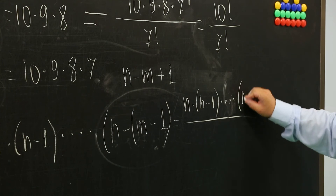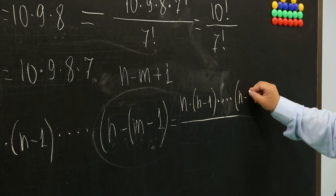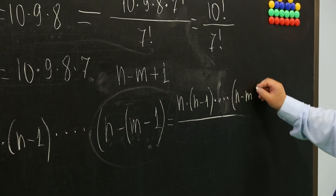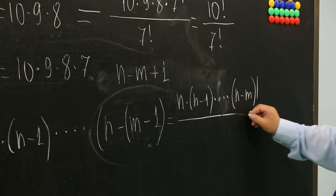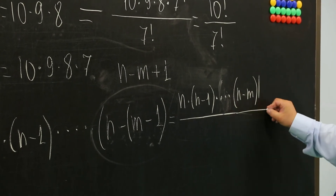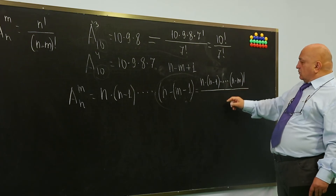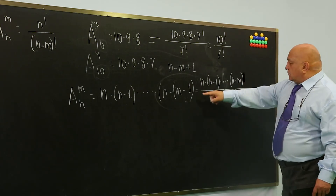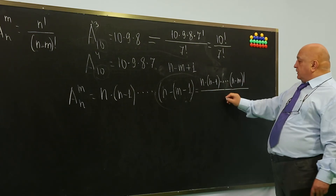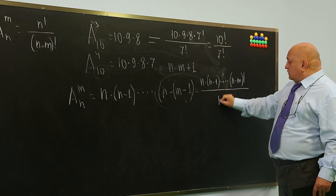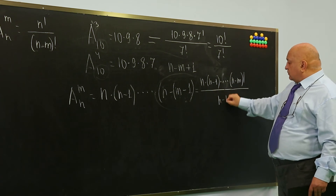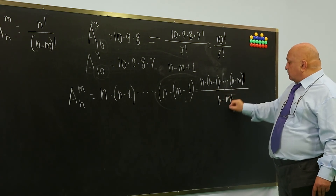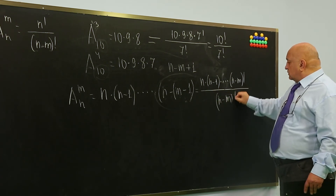n minus m is factorial. And n minus m is factorial.